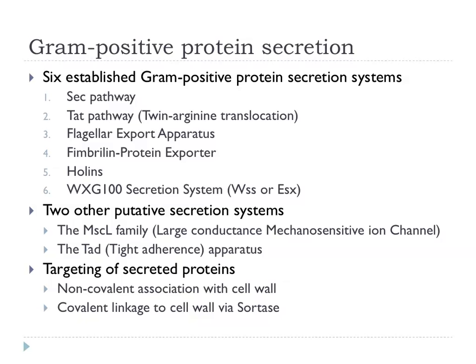When looking at gram-positive secretion, there are six established secretion systems. At the top is the SEC system, then the TAT pathway, the flagellar export apparatus, and then fibrillin and protein export and holins which I won't mention. Most of today we're going to talk about the WXG100 secretion system, also called ESS or ESX. The next lecture will be on targeting of secreted proteins via an enzyme called sortase.